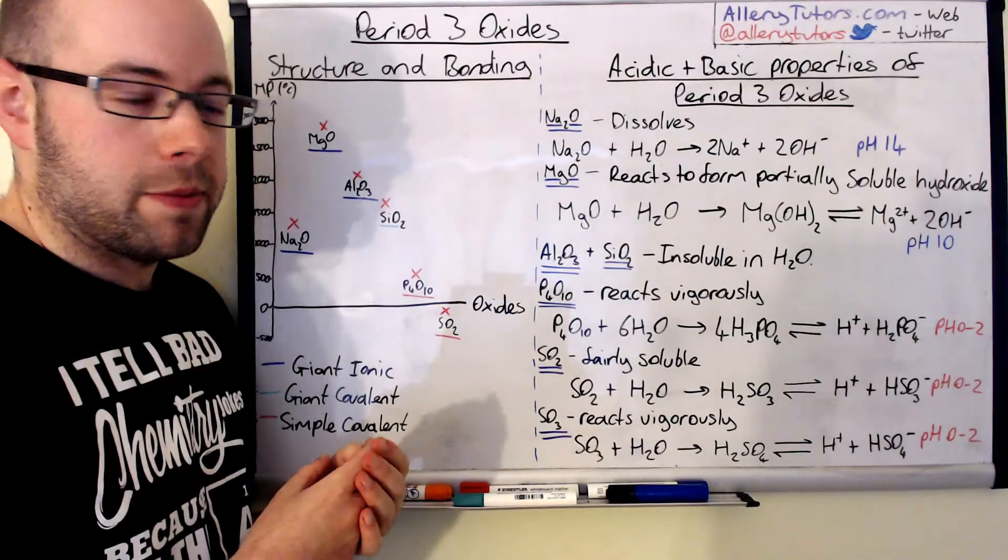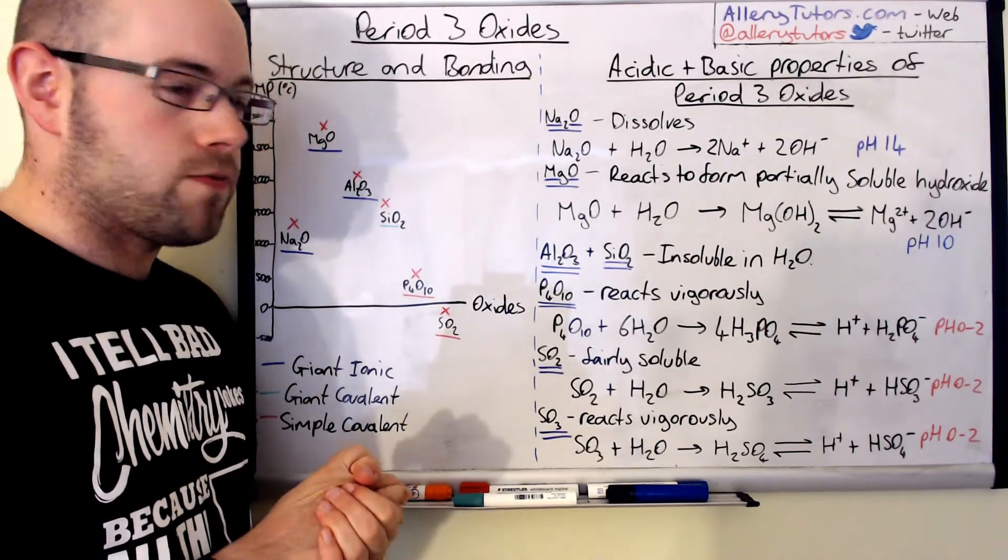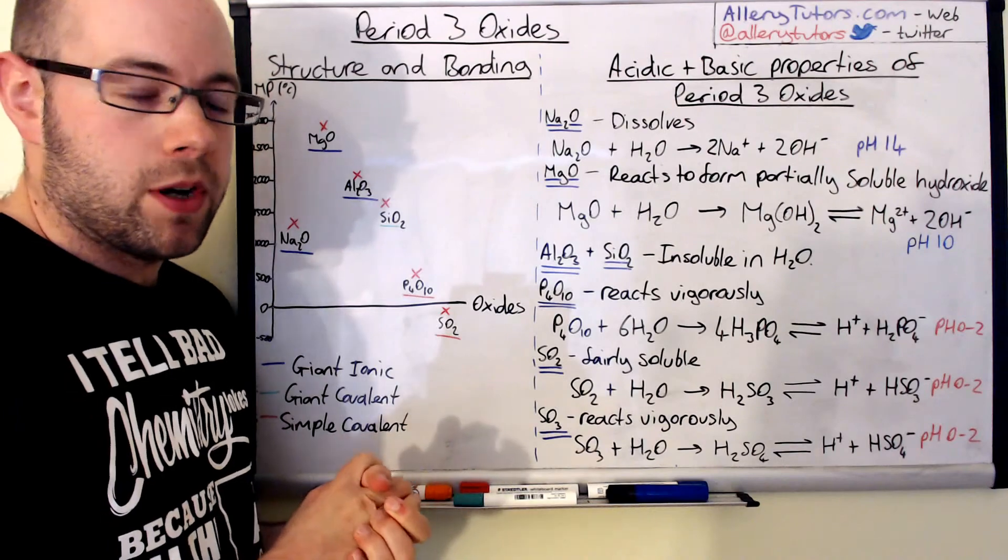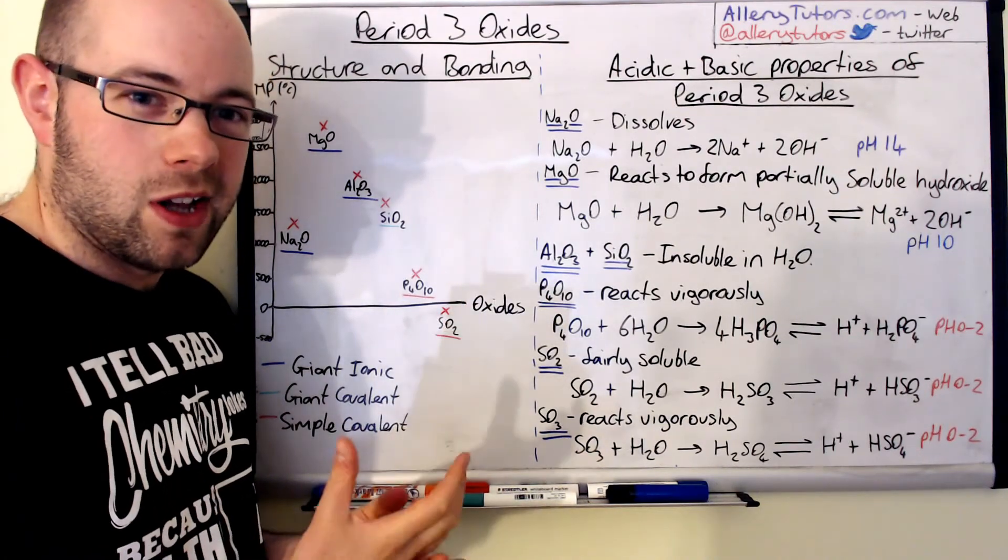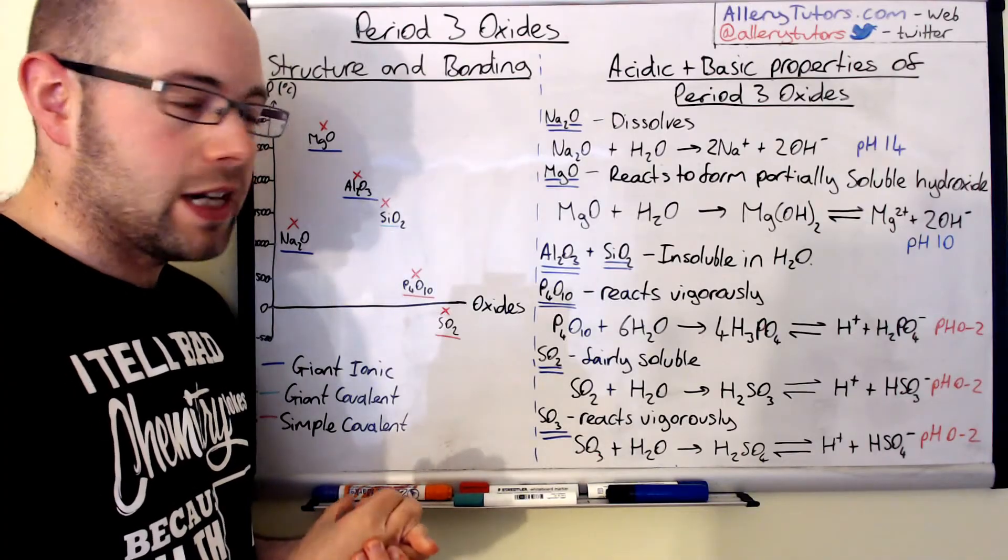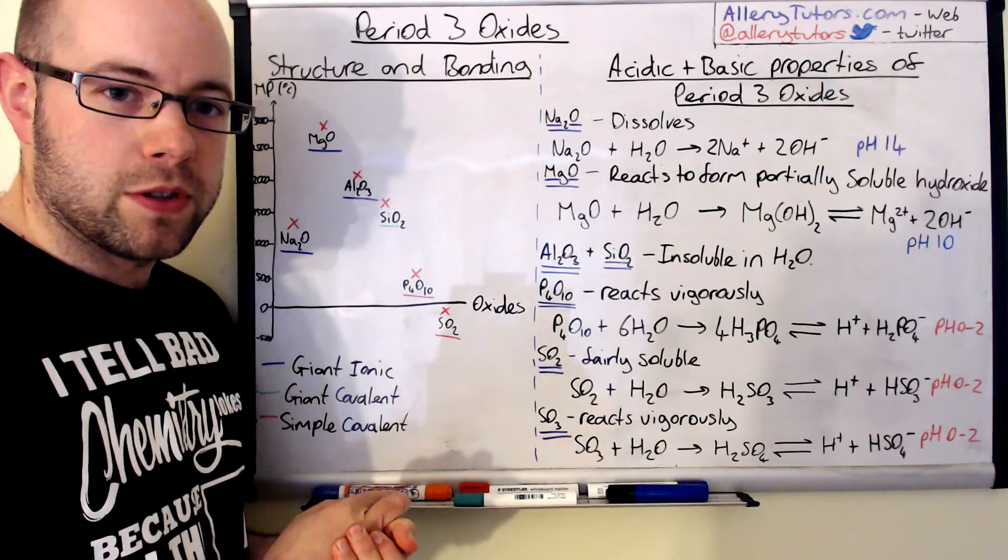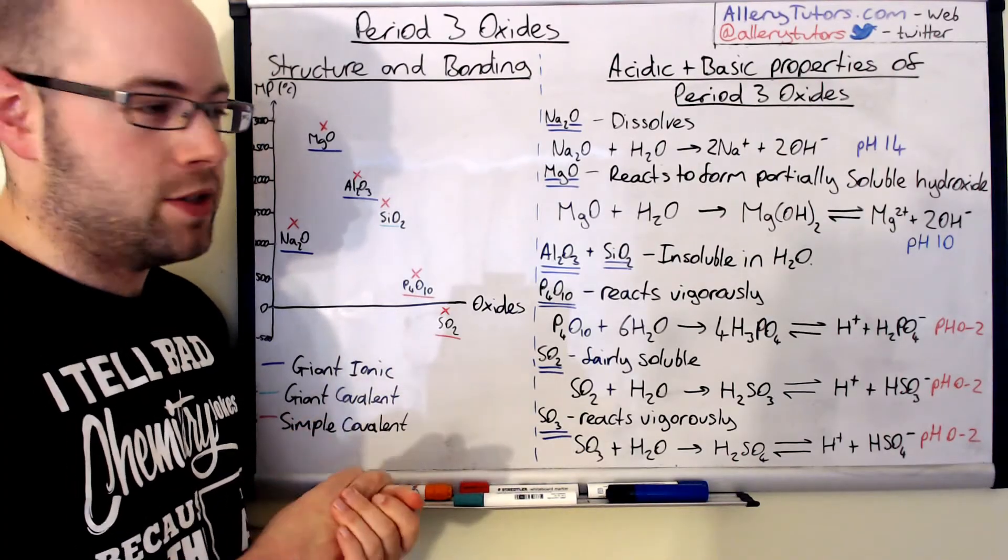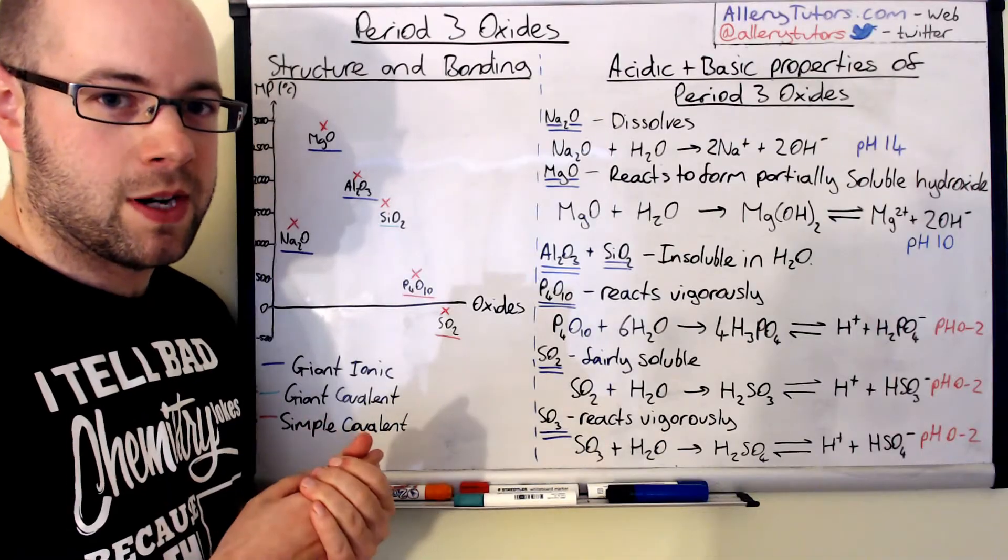If we go to the next elements along, aluminium and silicon, these two compounds are really strong giant structures. So for example, aluminium oxide has a lot of covalent character in there, silicon dioxide is giant covalent, very strong bonds between them, water can't break these up, they're insoluble in water so therefore they don't react. So we don't need to do any equations for them.